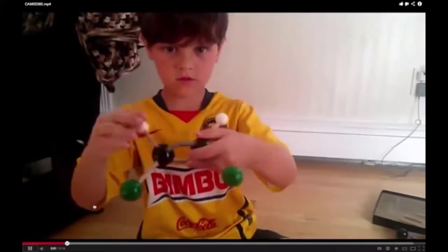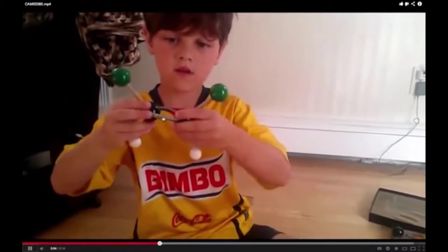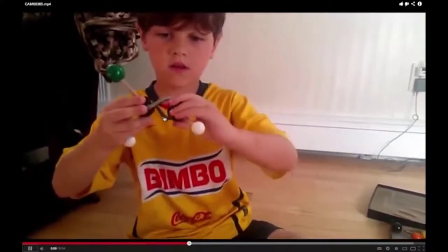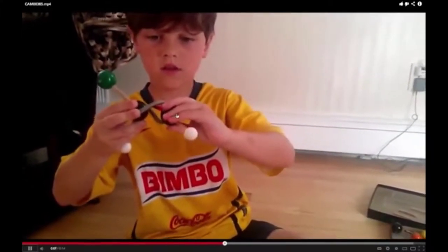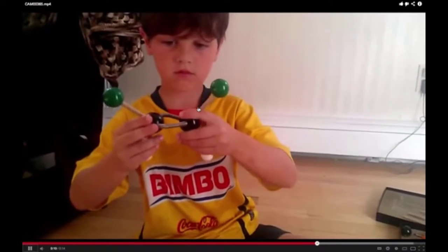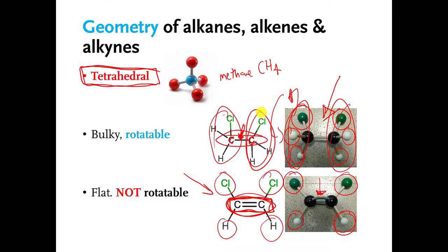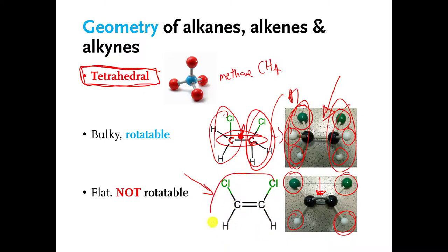Here's my son showing you the molecule with the carbon-carbon double bond, showing you that you can twist, but the atoms snap back into place — they don't rotate. Twist, and snap back. The fact that you can't rotate when you have a carbon-carbon double bond gives us a new kind of isomer.